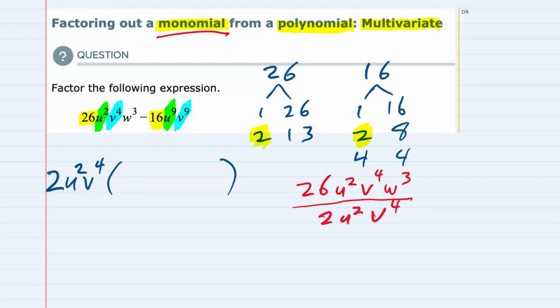And when we do that we can see that the 26 and the 2 are going to simplify to 13. The u squareds are going to completely cancel and the v⁴s are going to completely cancel, leaving me with just the w³. So from the first term, once I take out the 2u²v⁴, I'm left with 13w to the third power.